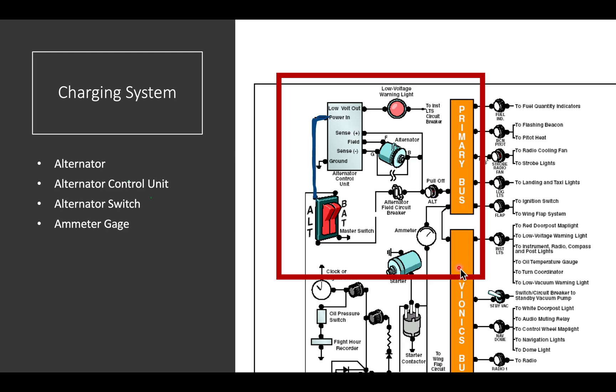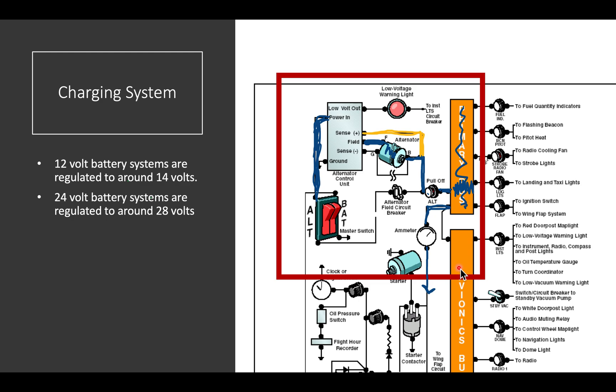When we turn the alternator switch on, it supplies current to the alternator control unit, which in turn supplies current to the field and the alternator. And as long as the alternator is being turned by the engine and has current being supplied to the field, it puts out electricity into the bus. And it puts it out at a higher voltage than the battery. So with a 12-volt battery, the system will be regulated to about 14 volts. With a 24-volt battery, the system will be regulated to about 28 volts. And what that does is it allows the system to push electricity back into the battery and recharge the battery, in addition to running all of your devices.